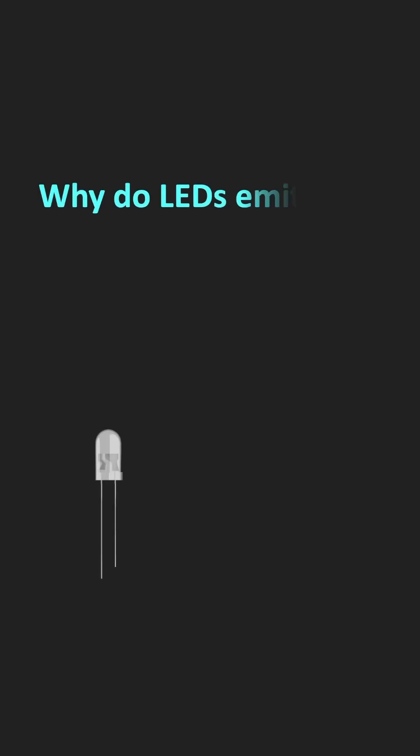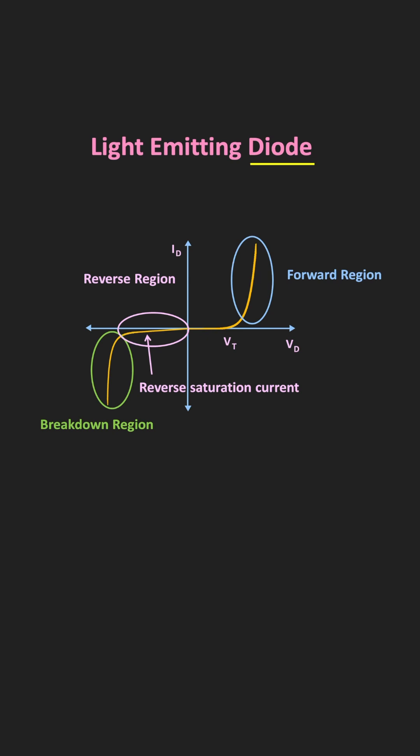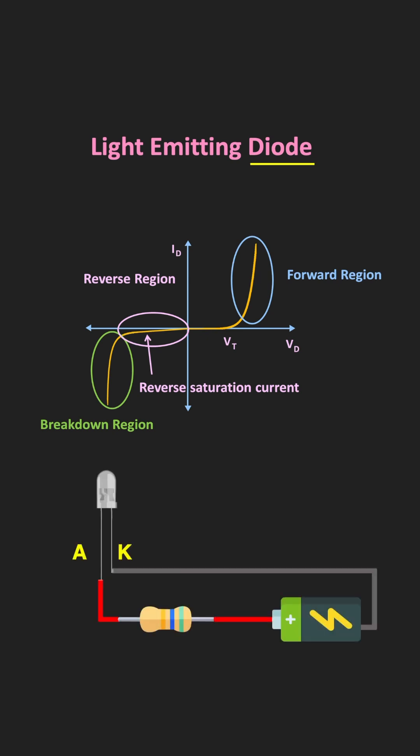In this short video, let us understand why LEDs emit light while diodes do not. The LED, or light emitting diode, is one kind of P-N junction diode because its electrical characteristic is similar to the normal P-N junction diode. That means, unless the voltage between the anode and the cathode of the LED exceeds the threshold voltage, it will remain in the off condition. But when this voltage exceeds the threshold voltage, current starts flowing through the LED, and during this process, the LED also emits light.